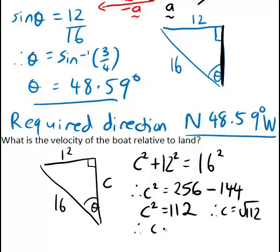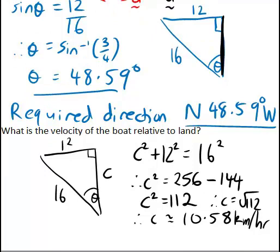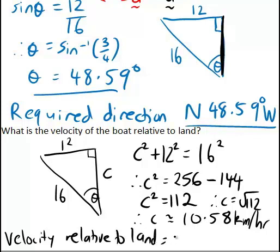And to two decimal places that works out to be 10.58. So what units is this in? Since this represents speed and originally we saw all speeds were in kilometres per hour, and the velocity is both speed and direction, since we know the velocity of the boat relative to land was required to be due north, we can now say that the velocity relative to land is in fact 10.58 kilometres per hour due north.